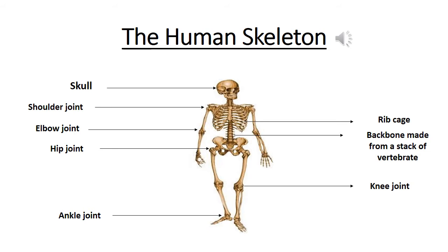What is skeleton? A skeleton is the hard structure that protects the internal organs of a living thing. Skeletons can be inside the body or outside the body. In mammals, which includes humans, the skeleton is made up of bones. All the bones when they are joined together make the skeleton of a body.